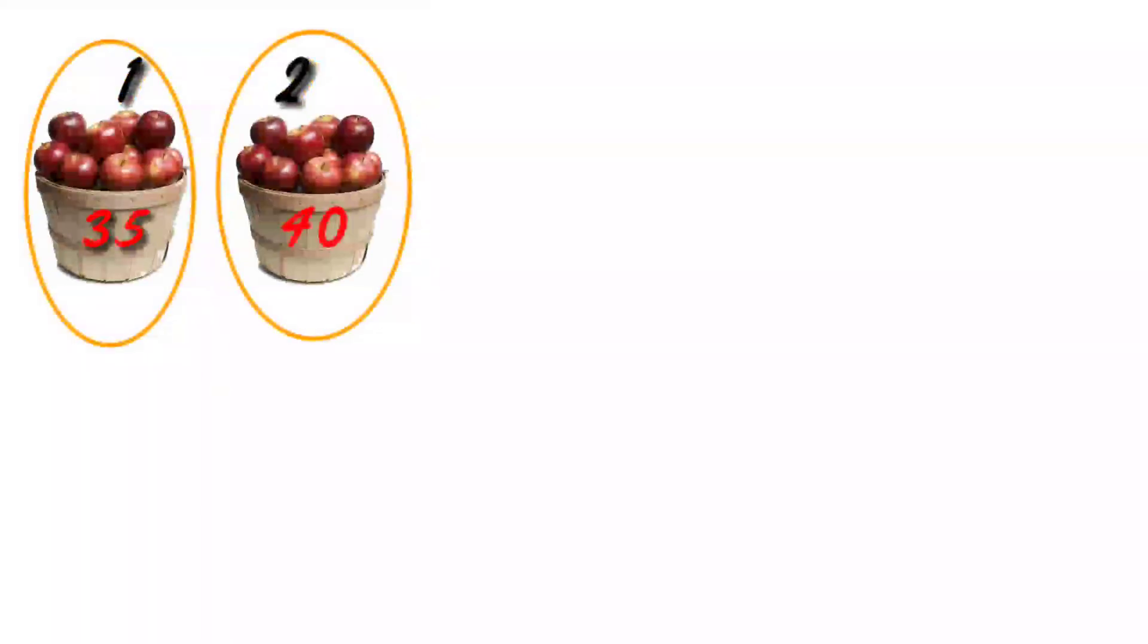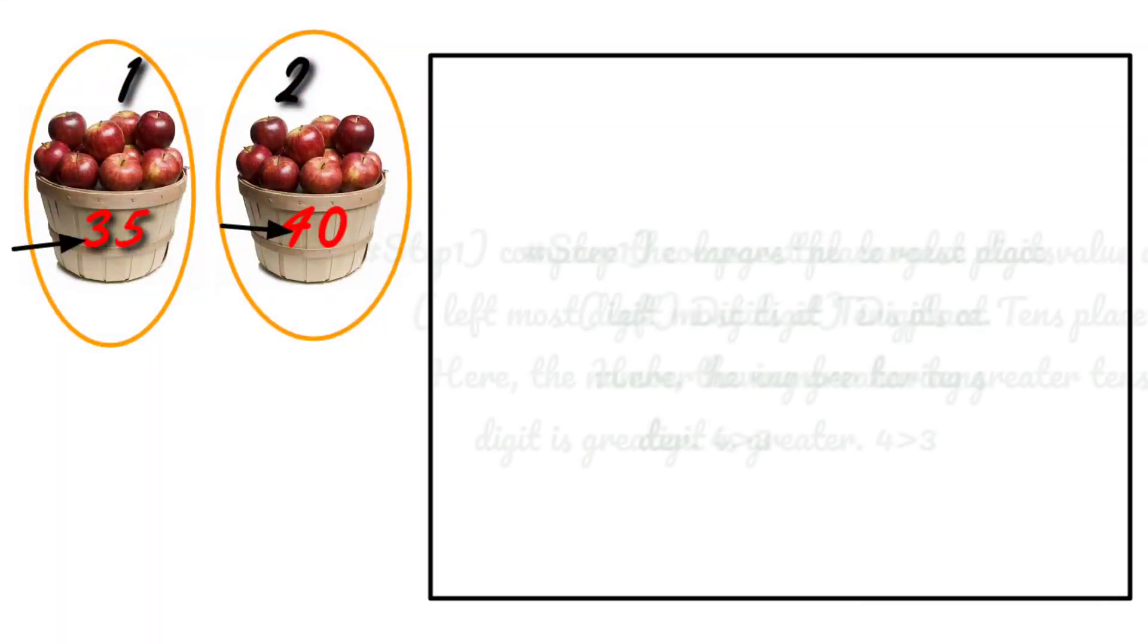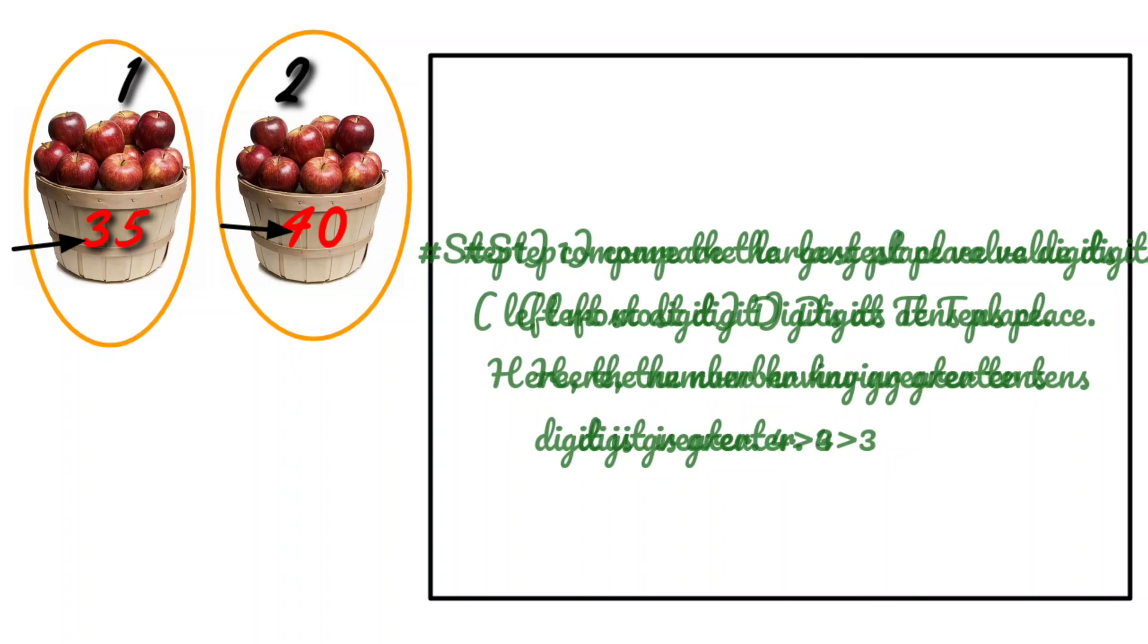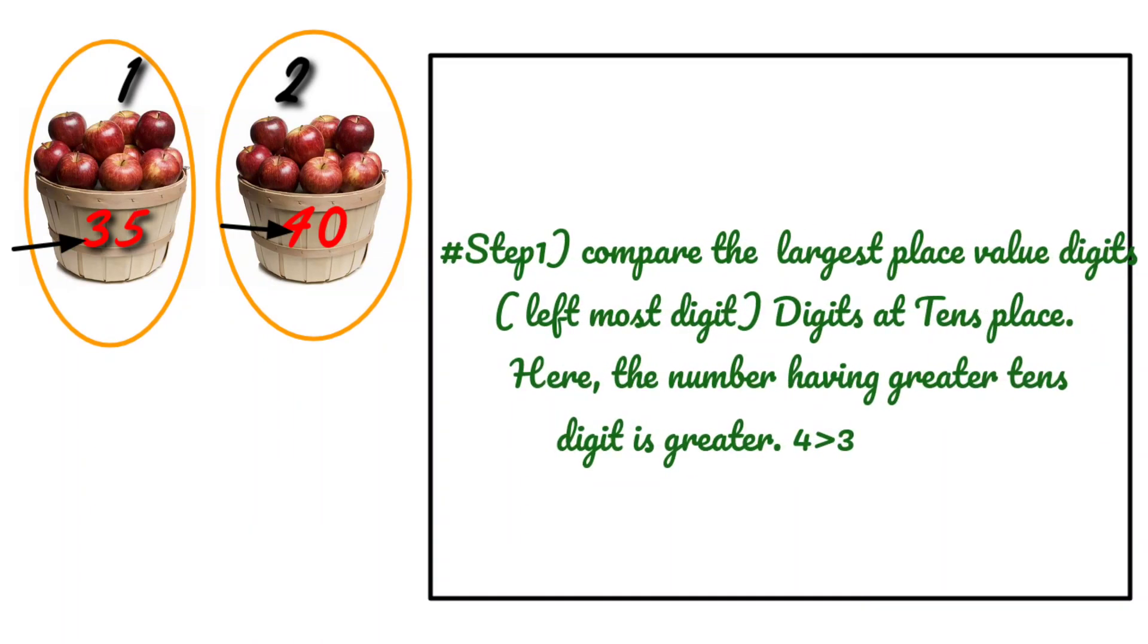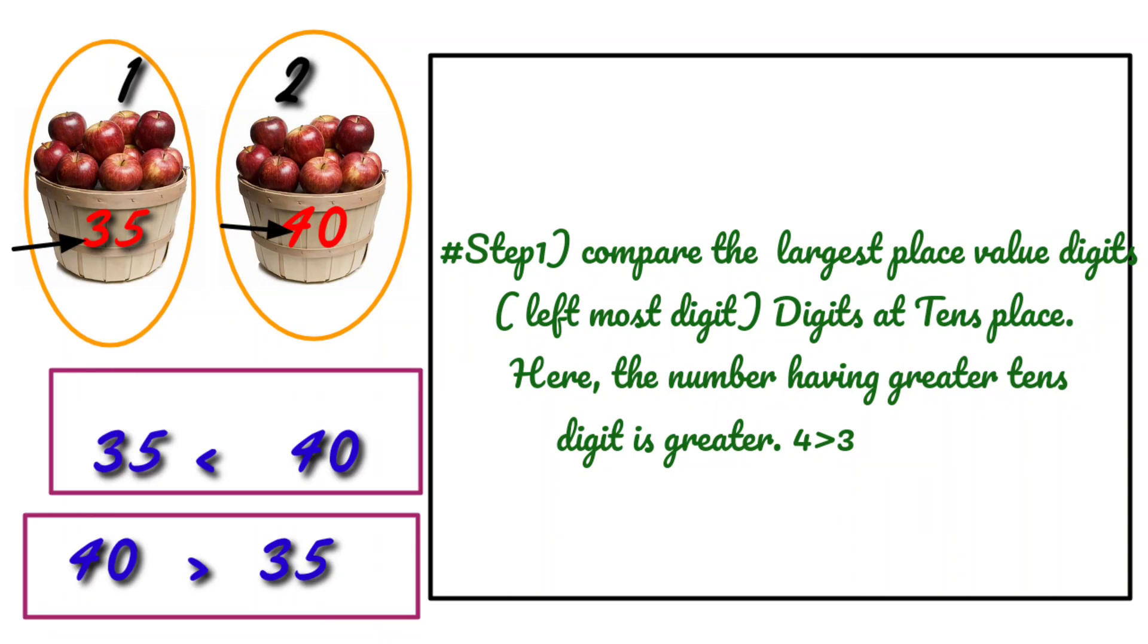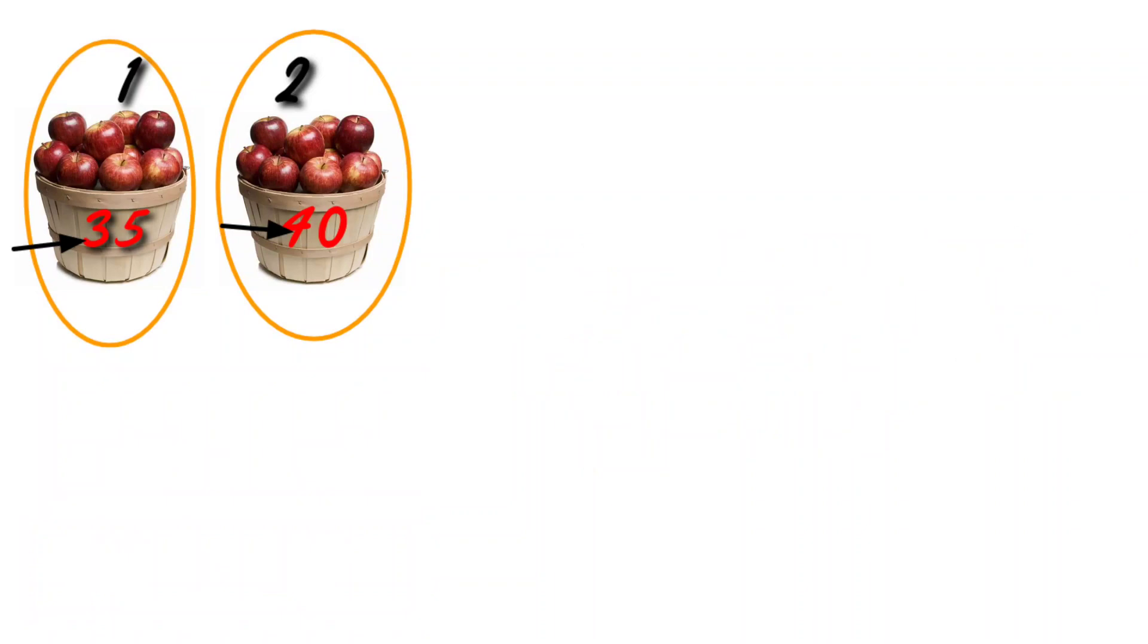Now see how to compare the numbers. See here are two baskets, one is having 35 apples and another is having 42, so following step one, compare the largest place value digit, the left most digit. The arrow is given at the digit at tens place, so here the number having greater tens digit, that is 4, so 42 is greater than 35.